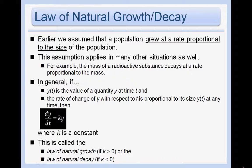In general, if y(t) is the value of a quantity y at a time t and the rate of change of y with respect to t is proportional to the size y(t) at any time, then we can say that dy/dt equals ky, where k is a constant. This is called the Law of Natural Growth if k is greater than 0, or the Law of Natural Decay if k is less than 0.